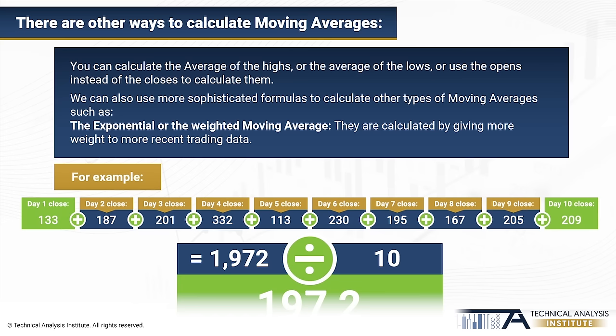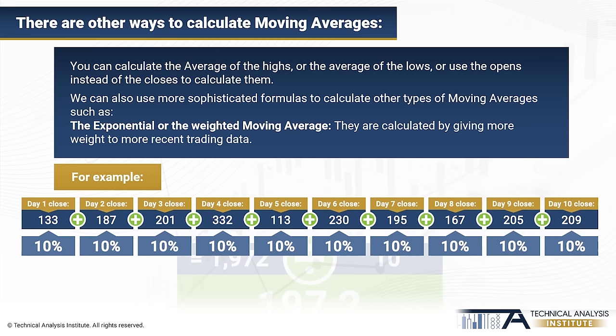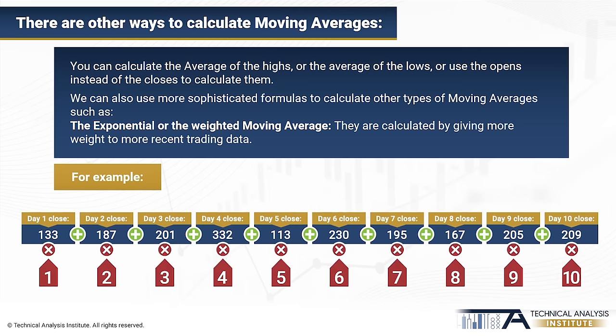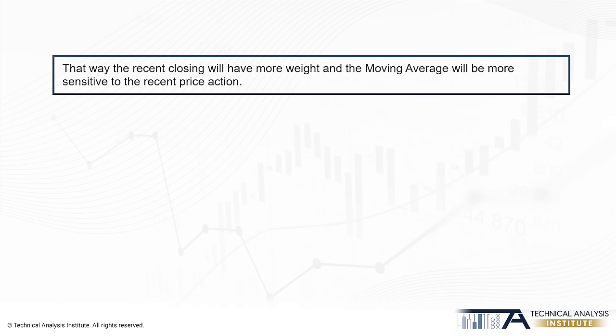It is as if each day had 10% weighting, so to speak. But you may think: I am more interested in the closing from the last few days. And that would make sense. So that is how the weighted moving average came into being. To calculate it, the closing price of the 10th day would be multiplied by 10, the 9th day by 9, the 8th day by 8, and so forth. That way, the recent closing will have more weight and the moving average will be more sensitive to recent price action.